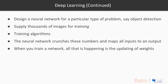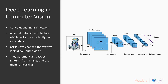In this section, we will use a neural network that has already been trained to recognize many different objects. A convolutional neural network is a special type of neural net which tends to perform really well on visual data like images and videos. CNNs have completely changed the way we look at computer vision and came as a breakthrough. This network automatically extracts features from the images and uses them for learning, making it really easy for the user.